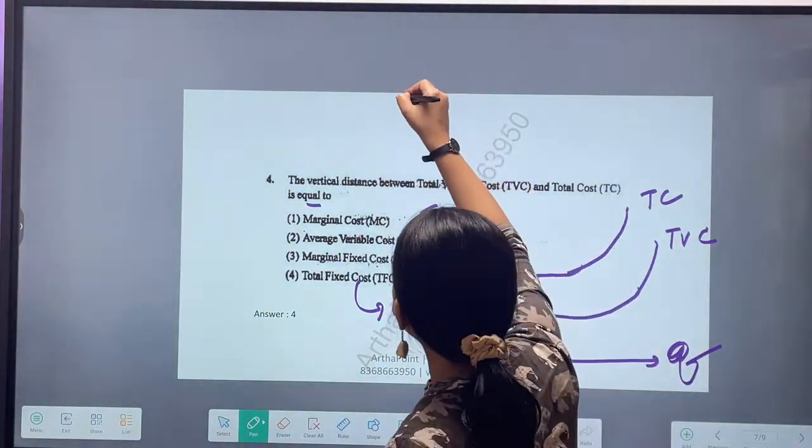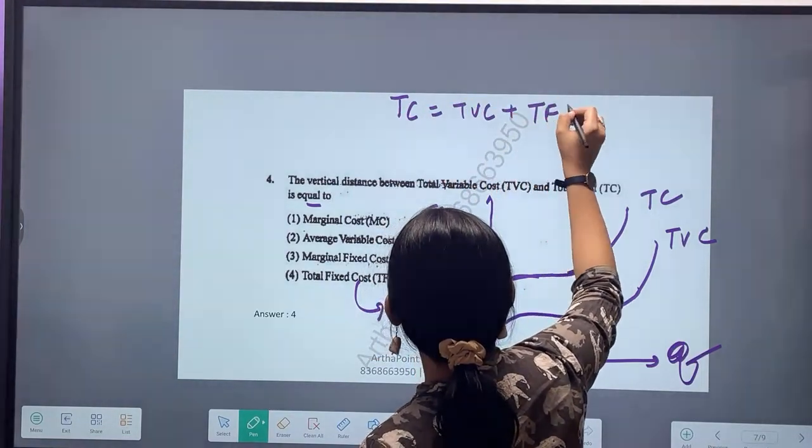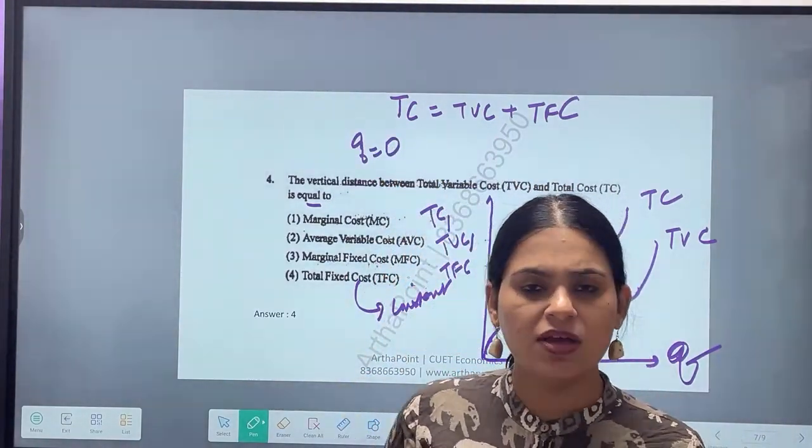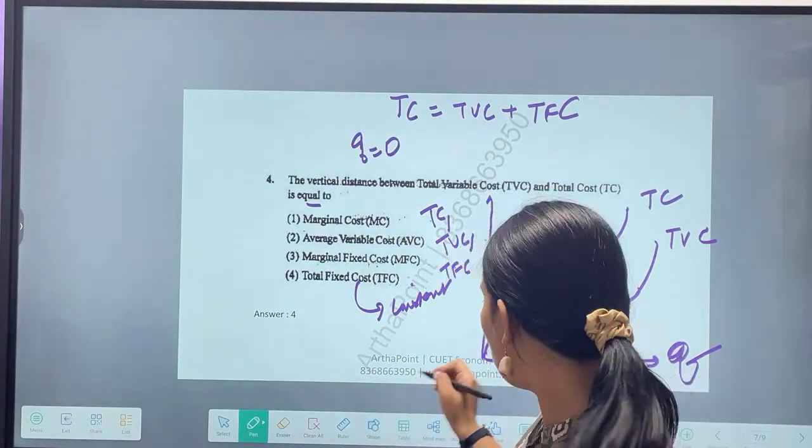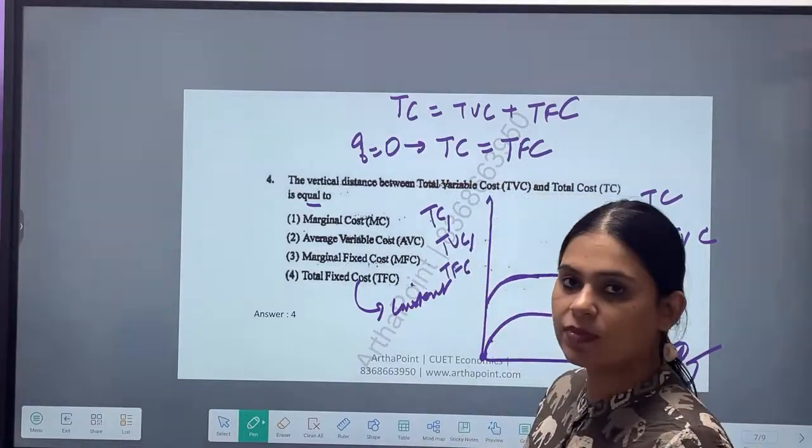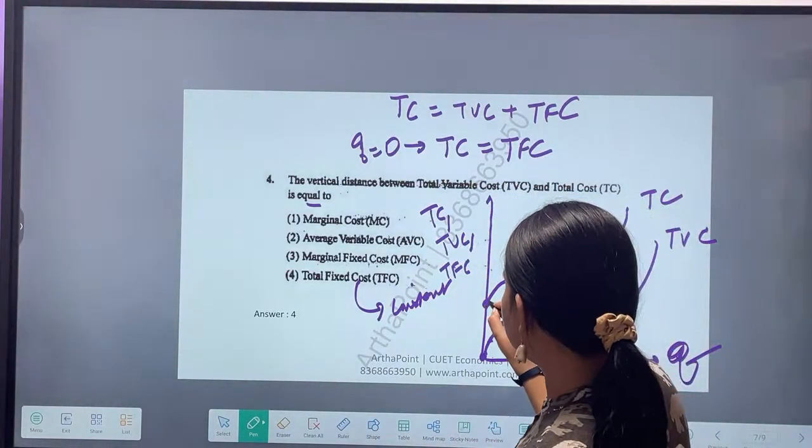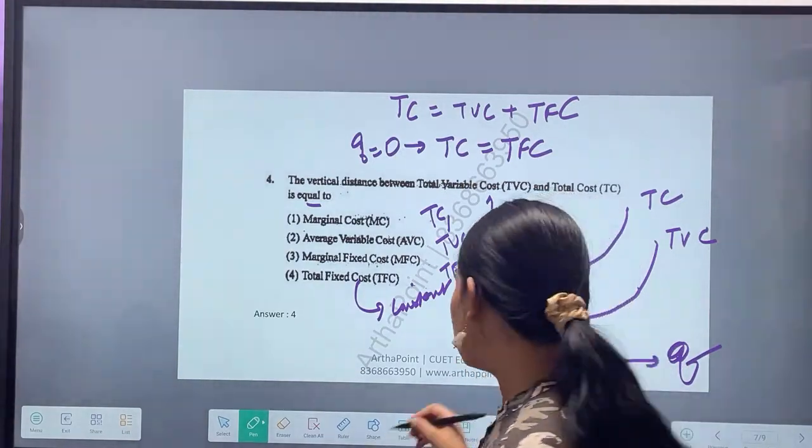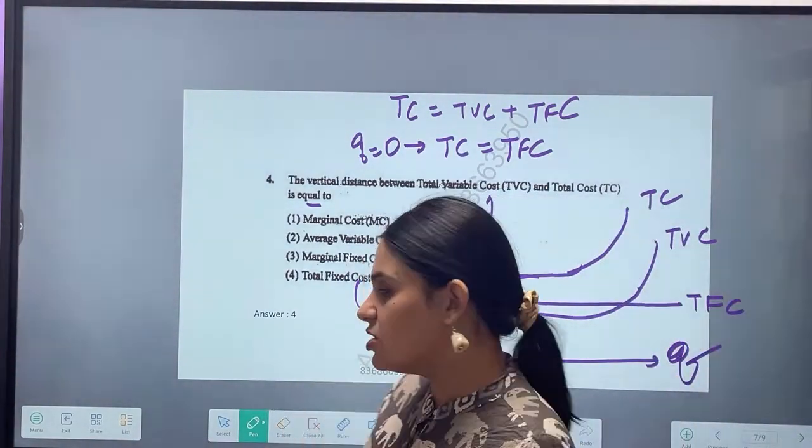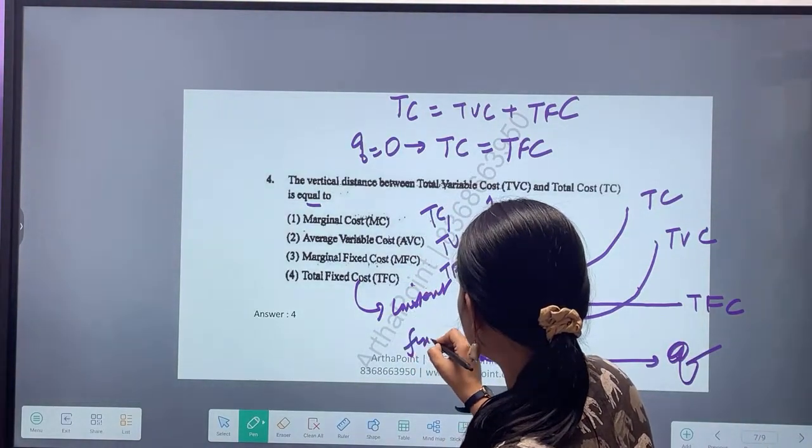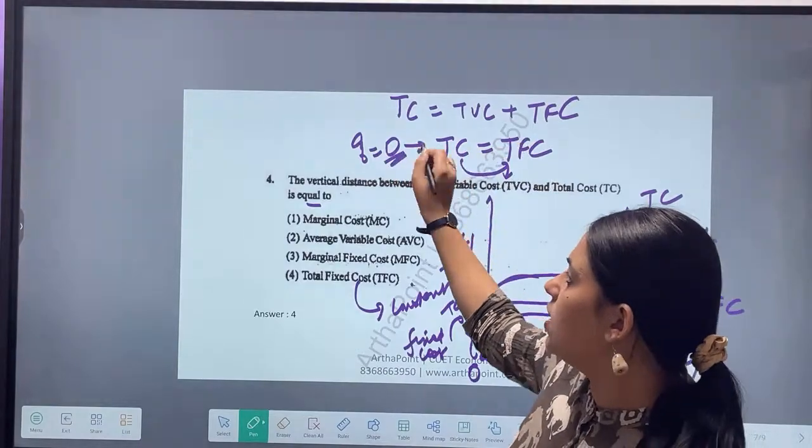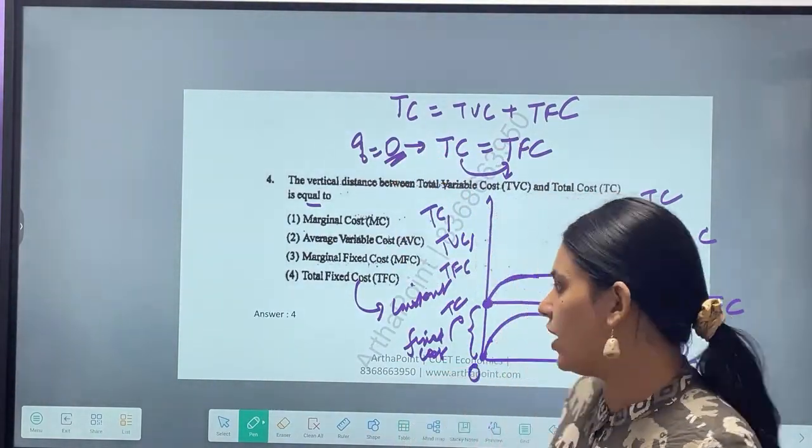Tell me something. TC is TVC plus TFC. But when my quantity is zero, when I am not producing anything, will I have any variable cost? No, variable will be zero when my quantity is zero. So at Q equals zero, TC equals TFC. That means my TFC must have been starting from this point. So if I want to plot TFC in the same diagram, it will be constant and it will start from this point. At Q equal to zero, this is my fixed cost, and that itself becomes the total cost because total cost and fixed cost are equal when Q is equal to zero. Clear?